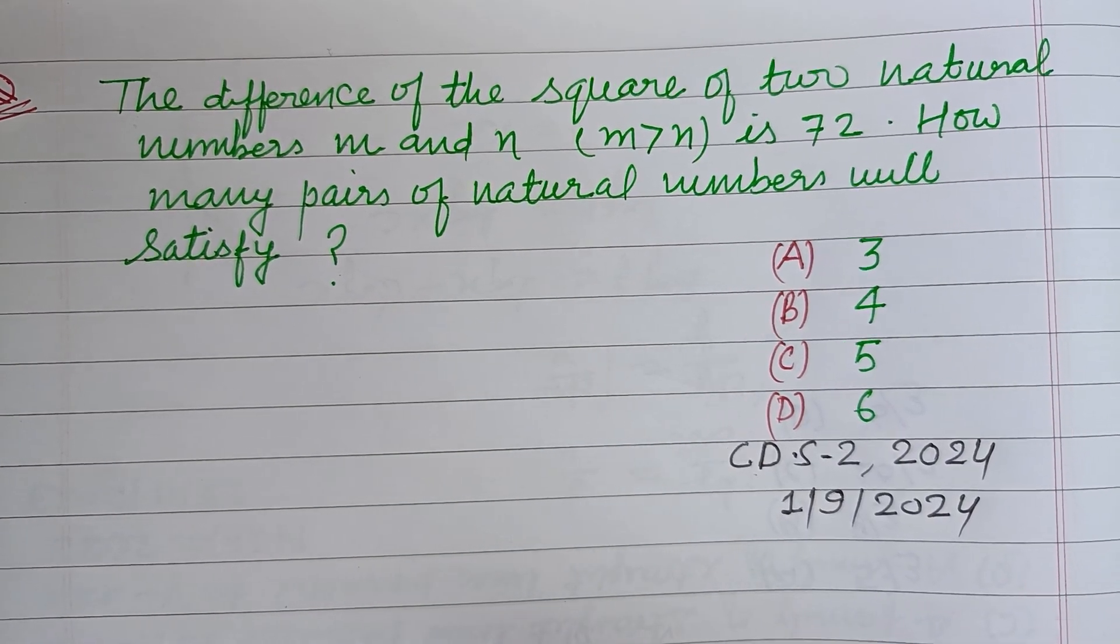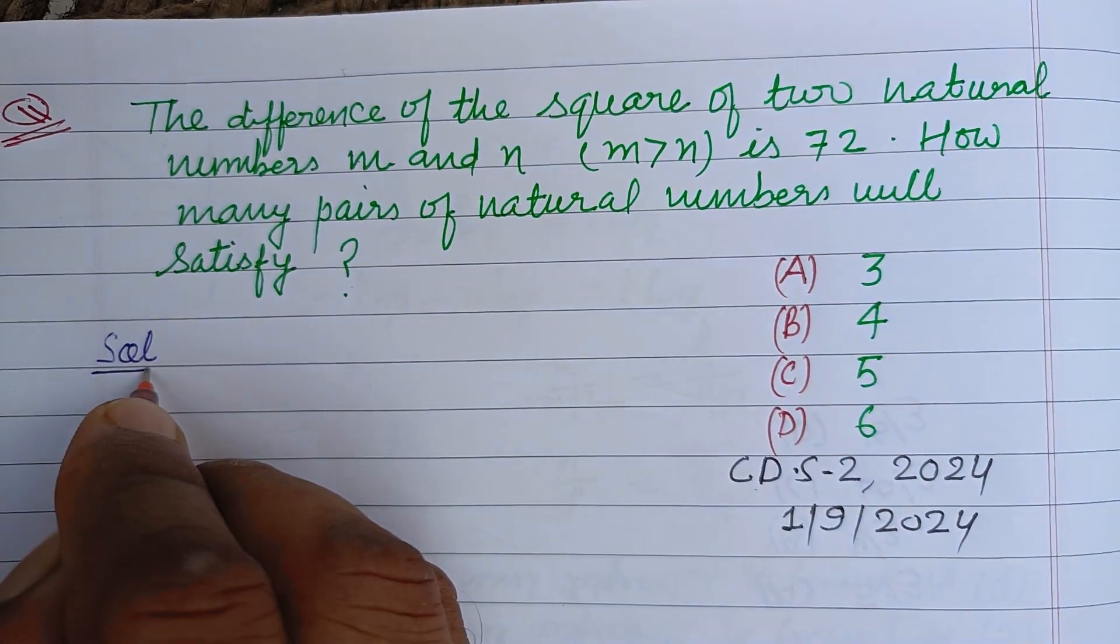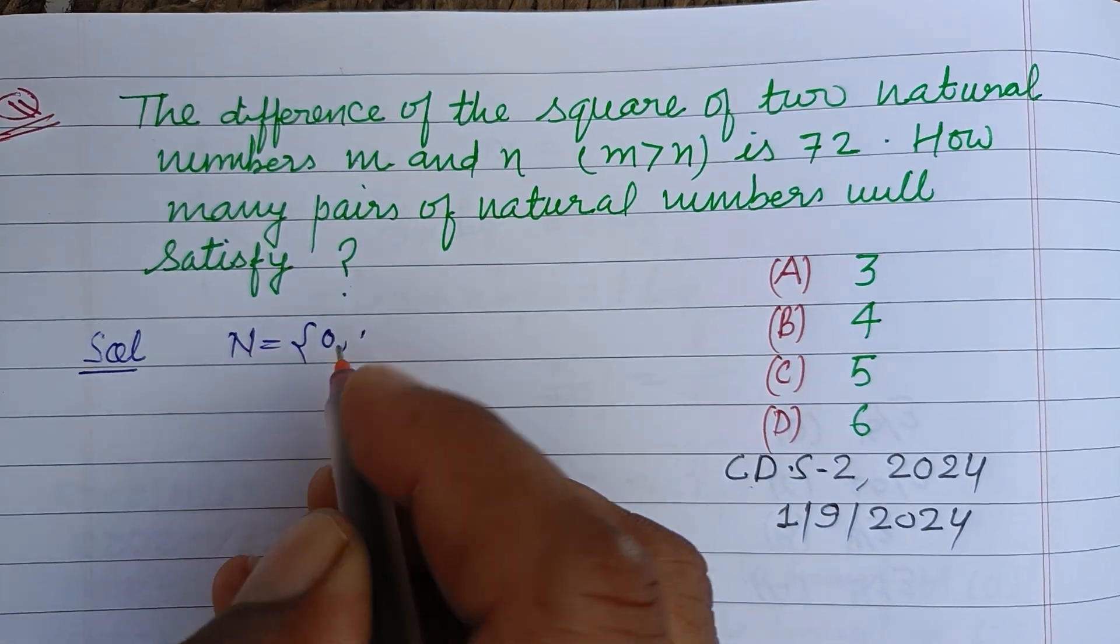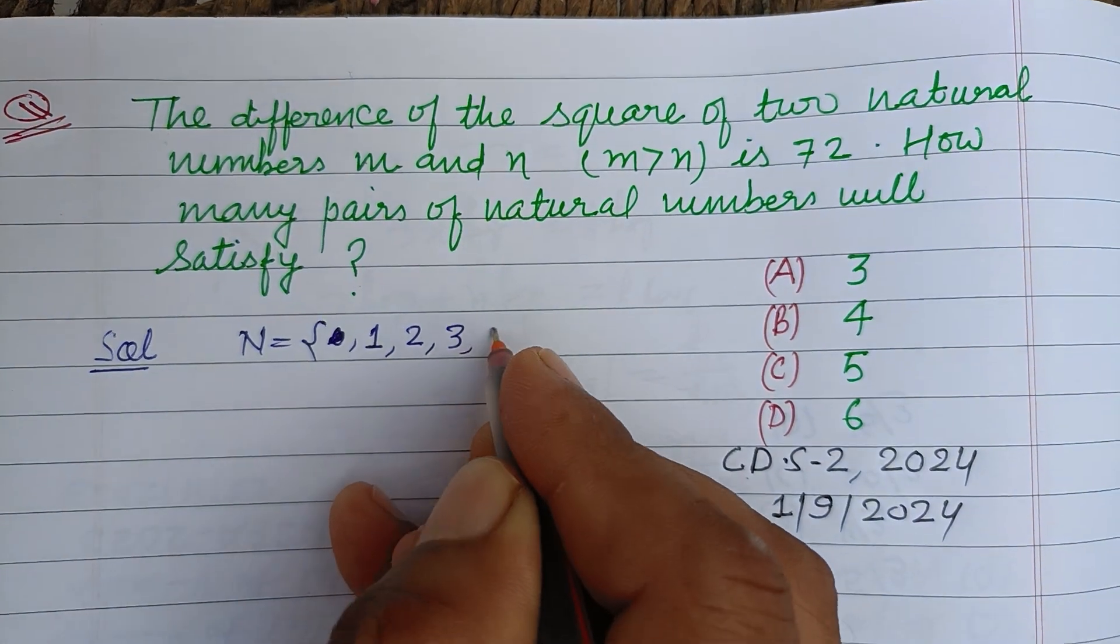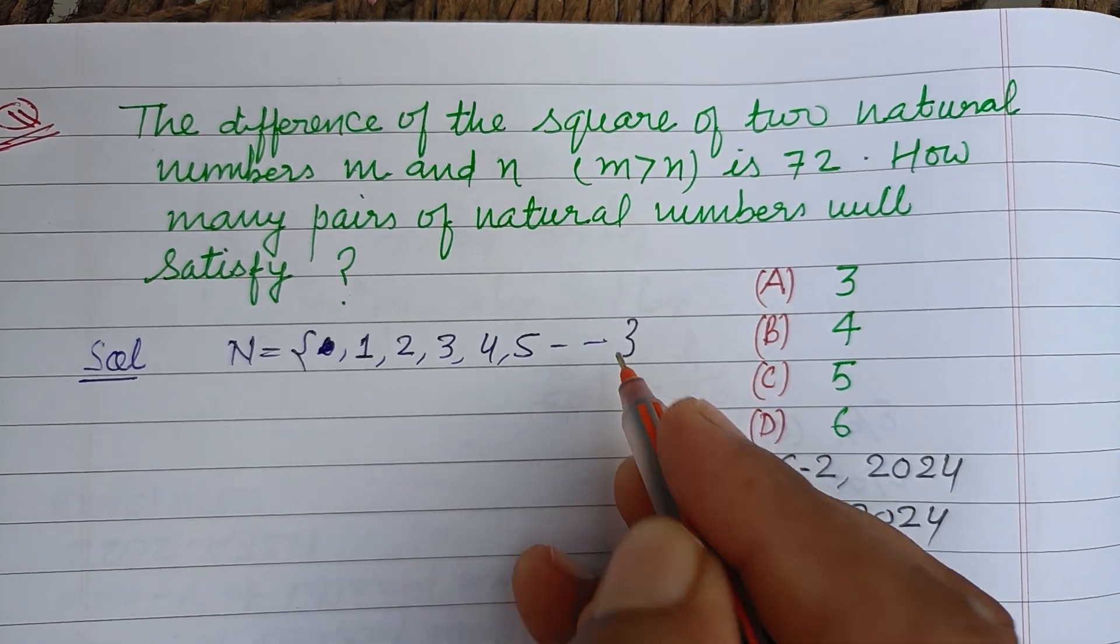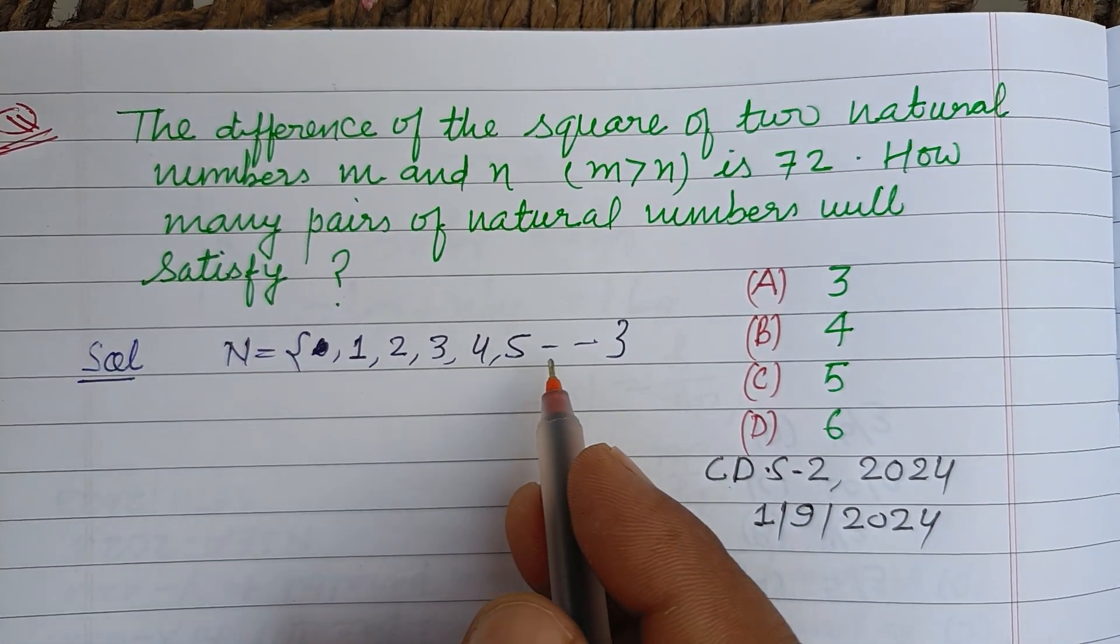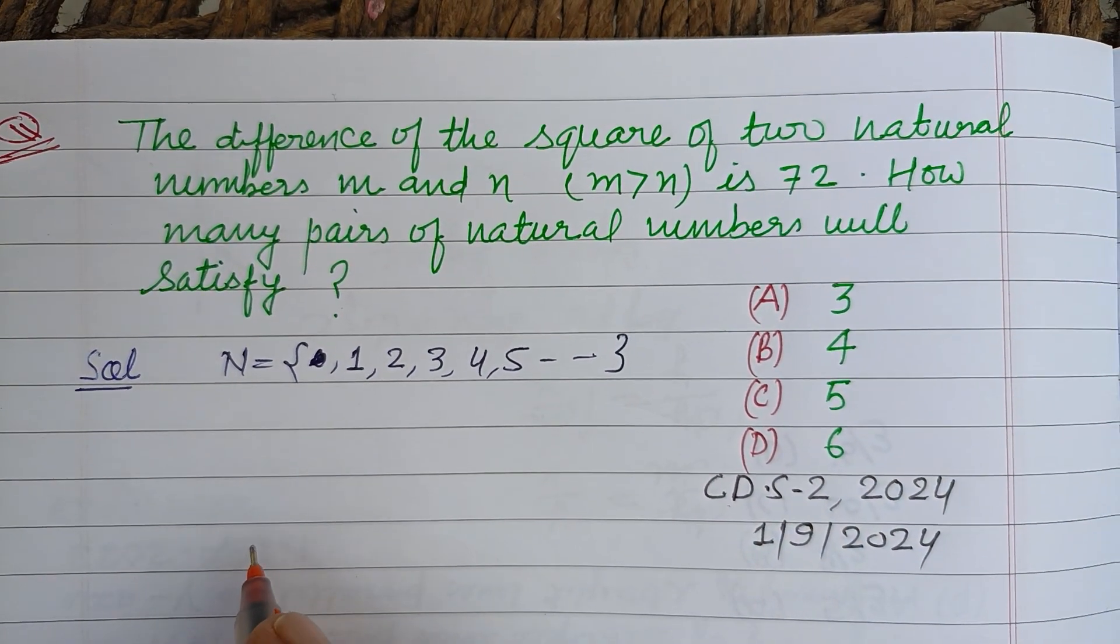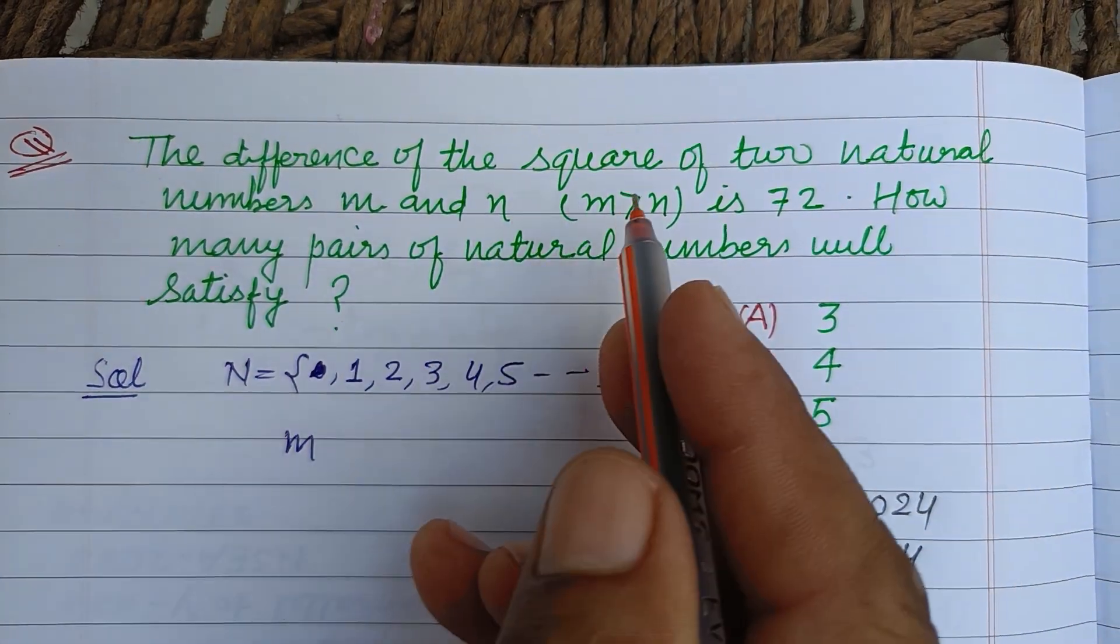How many pairs of natural numbers will be satisfied? So first we know that the set of natural numbers starts from 1, 2, 3, 4, 5, and 6. Zero is included in whole numbers. So the numbers should be natural numbers or integers.